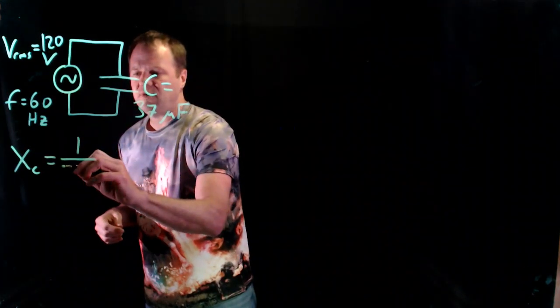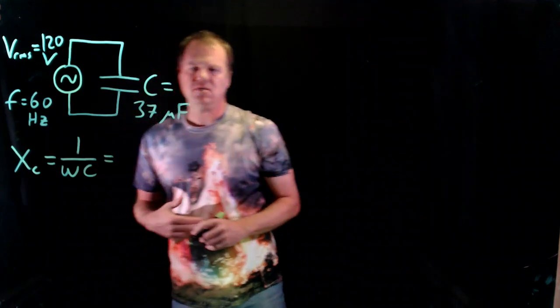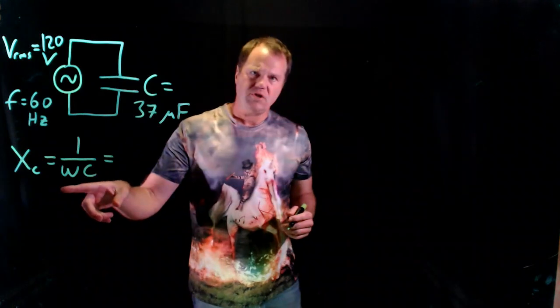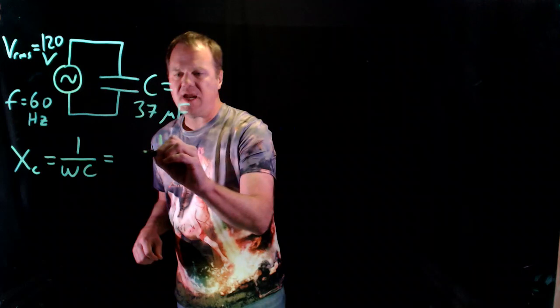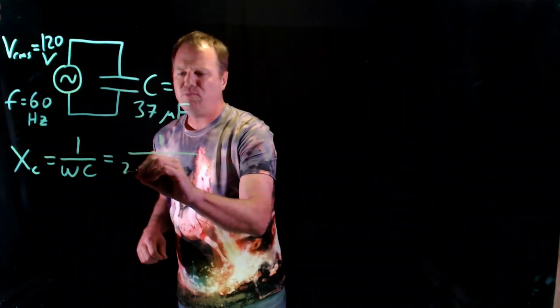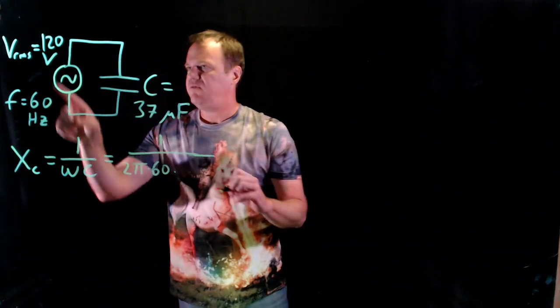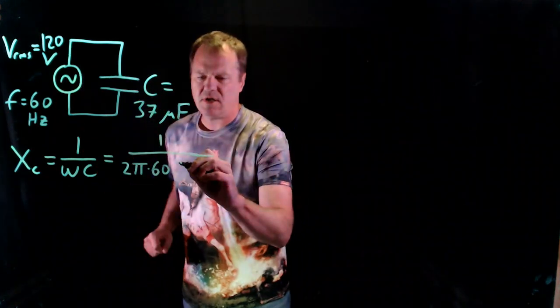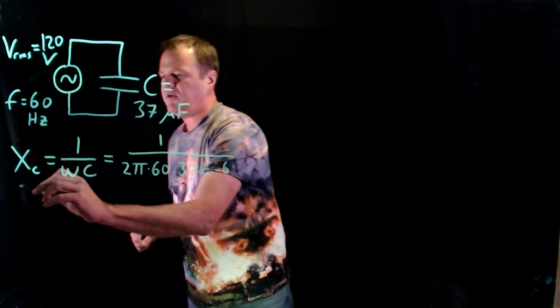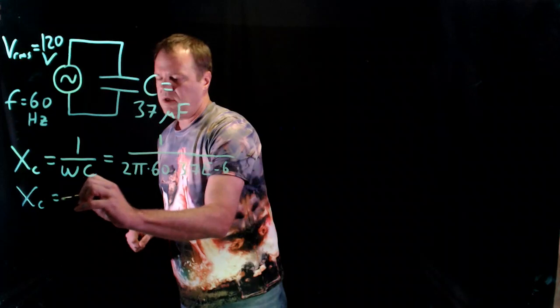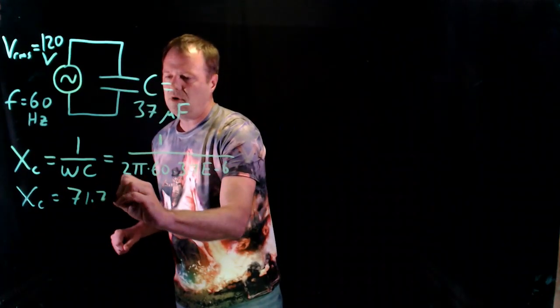And it's 1 over the angular frequency times the capacitance. Okay, so of course you've got to be careful - angular frequency isn't the same as frequency, but we basically have all the data we need. So 1 over 2π times the frequency, and then we have the capacitance of 37 microfarads, so converting everything to SI units. And I throw that into my calculator and I get 71.7 ohms.